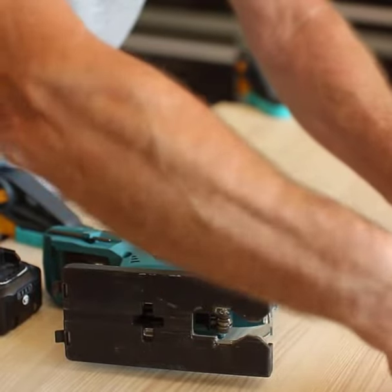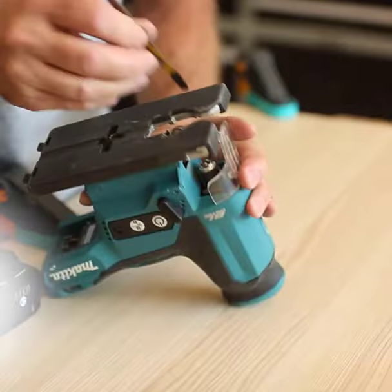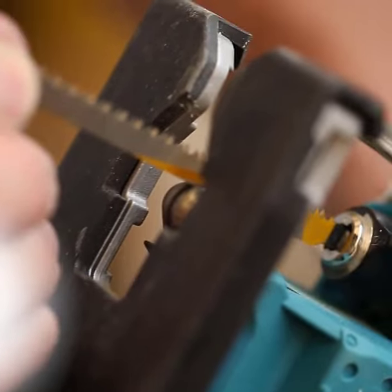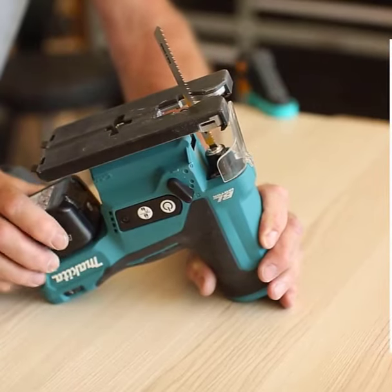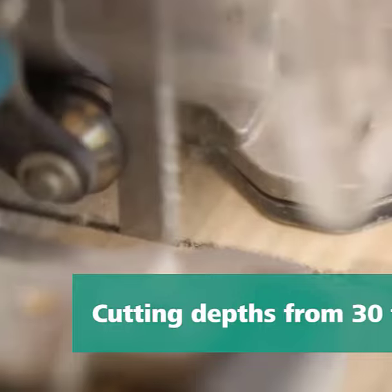The T-shaft jigsaw blades by Wolfcraft are meticulously designed for achieving exceptionally clean cuts on both sides, making them particularly suitable for projects involving materials like kitchen worktops. These blades offer a cutting depth ranging from 30 to 60 millimeters, providing versatility for various applications.